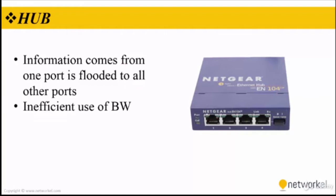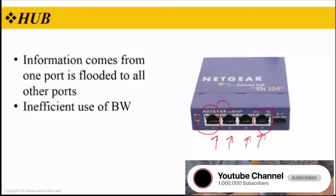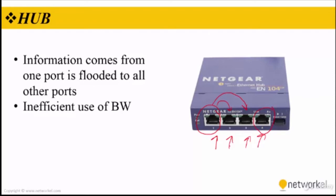As you can see in the picture, we have a hub with four ports for the devices. If port 1 wants to communicate with port 4, for example, the packet is flooded to port 2 and port 3 as well. As you can see, that is an inefficient use of the bandwidth.